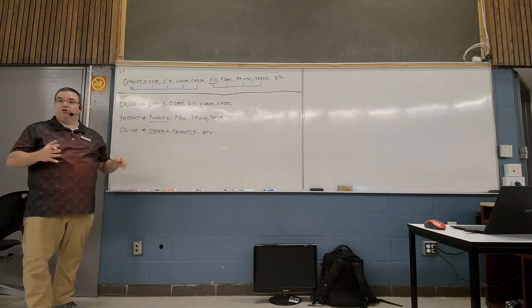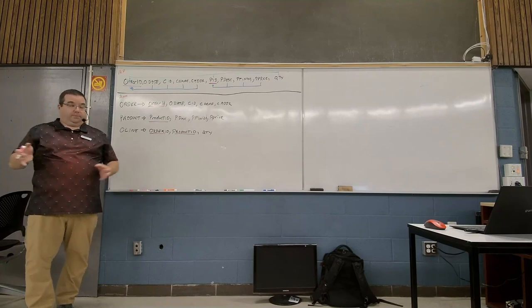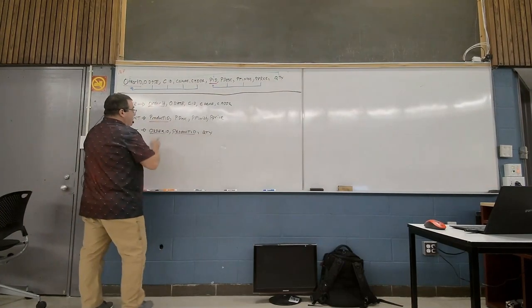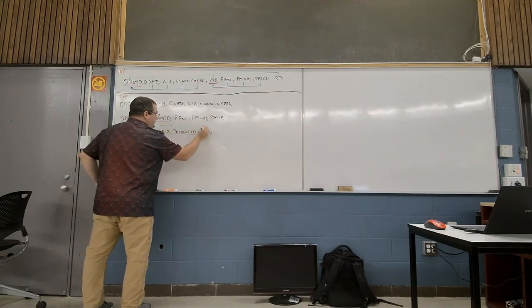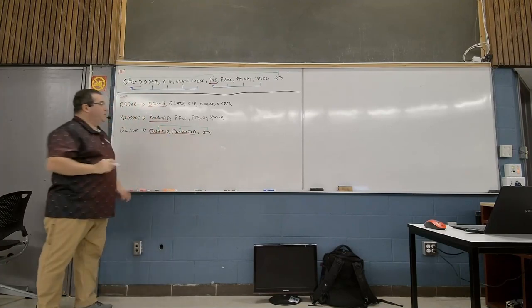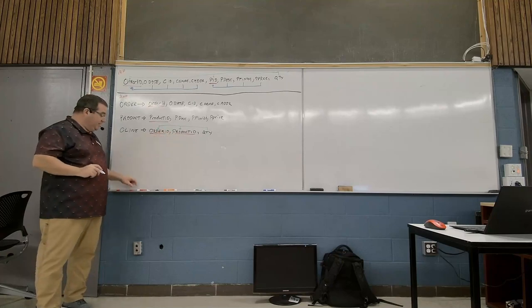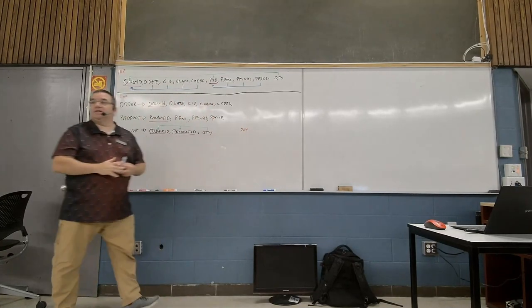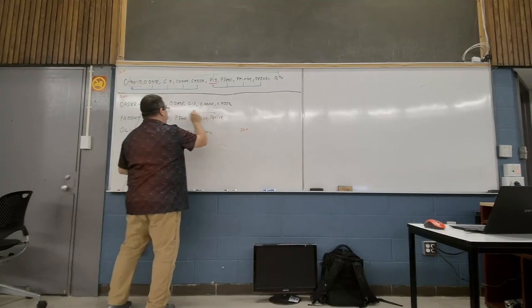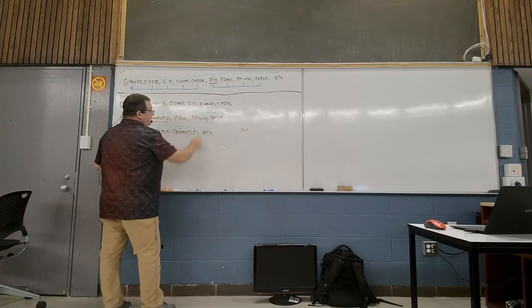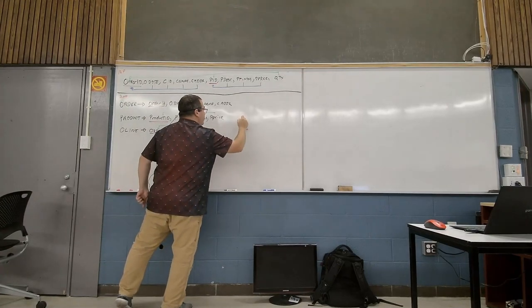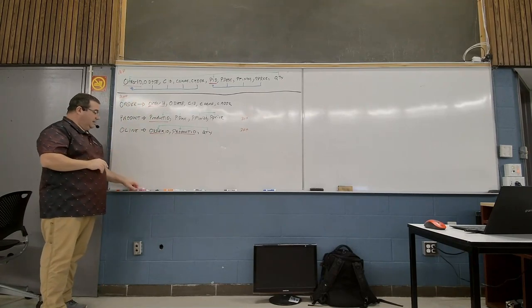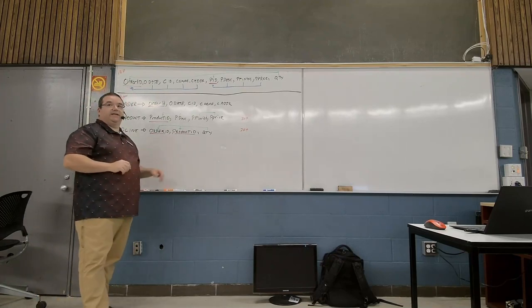For example, quantity is determined by order ID and product ID — it's fully dependent on the key and nothing but the key, and there's nothing else in that table. So we can honestly say the Order Line table is already in 3NF. The Product table: price, finish, and description depend on product ID — also in 3NF. The Order table, however, still has a problem.